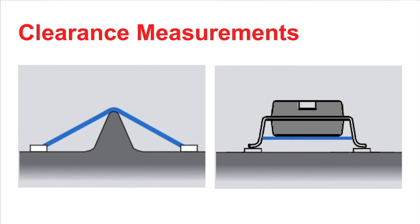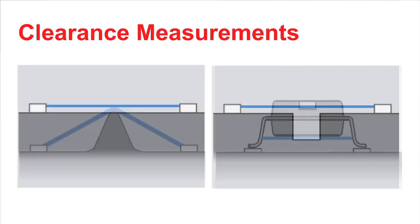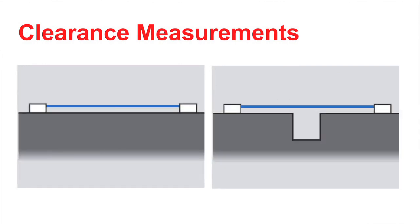Let's start by talking about clearance. Clearance is the shortest distance through air between two uninsulated conductors. These diagrams show different examples of how to measure clearance distance. Having adequate clearance for the voltage level and environment that you are designing for will prevent an arc over.